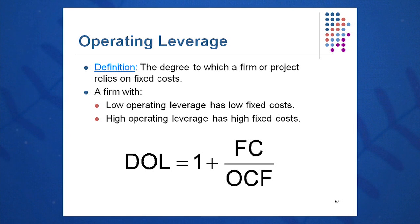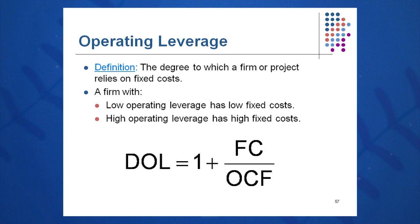Typically, companies with lots of property, plant, and equipment have a high degree of operating leverage and therefore have a high dependence on fixed costs. So low operating leverage implies low fixed cost, and high degree of operating leverage implies high fixed cost.